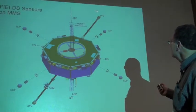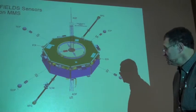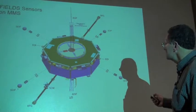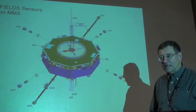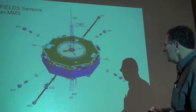The two black booms are larger because they need to be more stable. These are the magnetometer booms. There are two redundant flux gate magnetometers that measure the DC magnetic field.